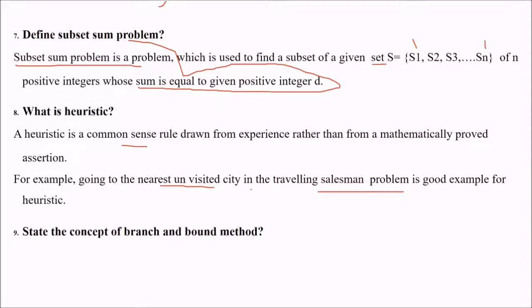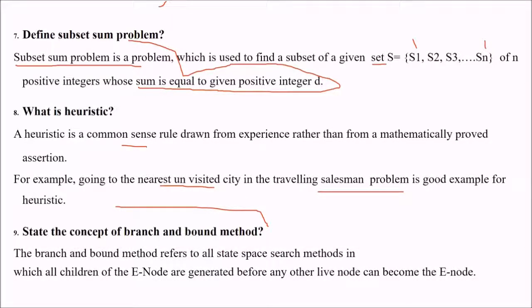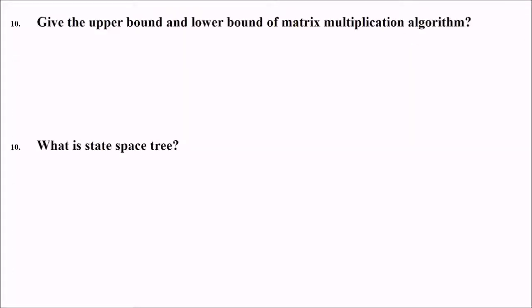What is the concept of branch and bound method? This method refers to all state space search methods in which all children of the E node are generated before any other live node can become the E node.